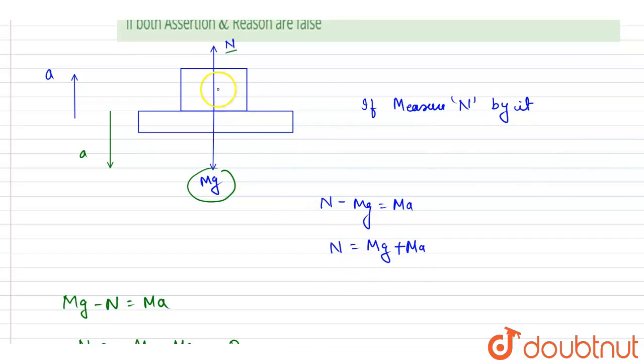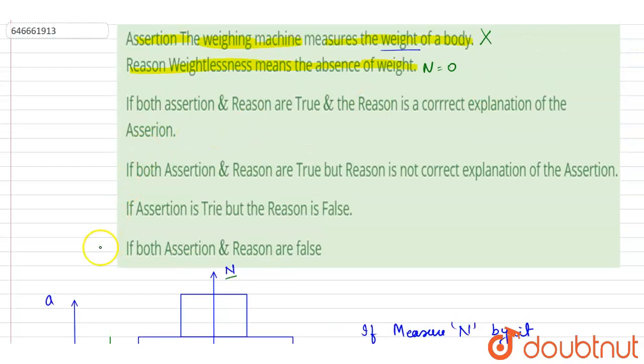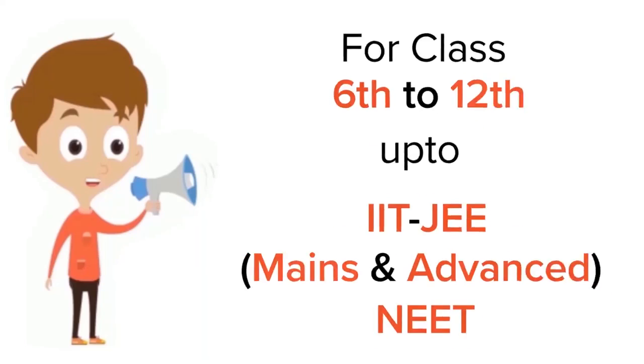The weighing machine does not measure the weight. It's just that when it is in equilibrium condition - in most cases when the weighing machine is not accelerating - then it will be equal to weight, but it is not compulsory. So both are false, so D is the correct answer. Thank you.